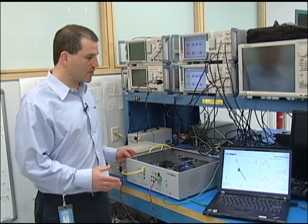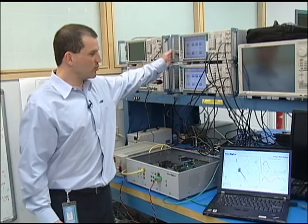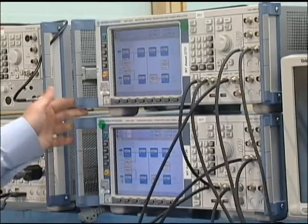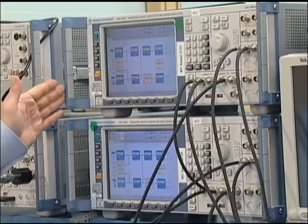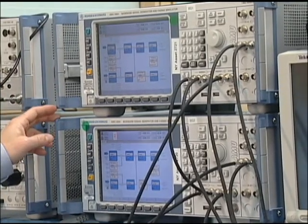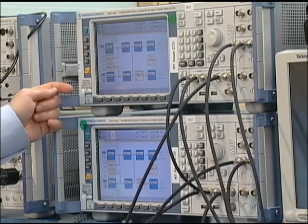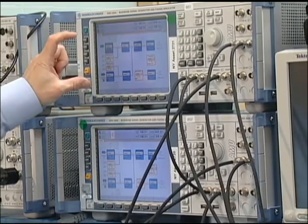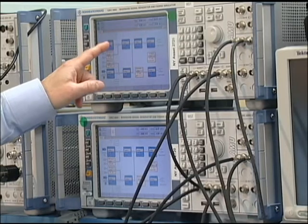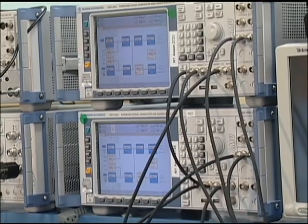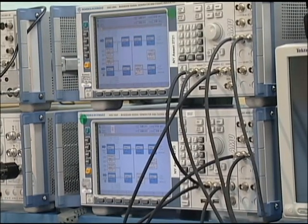What we have here are two Rohde & Schwarz signal generators. These signal generators are simulating the signals from two different cell sites—the signal being received by the UE and also an interference signal. Each signal is then put through a fading model and we add AWGN to simulate somewhat realistic conditions for our demo.